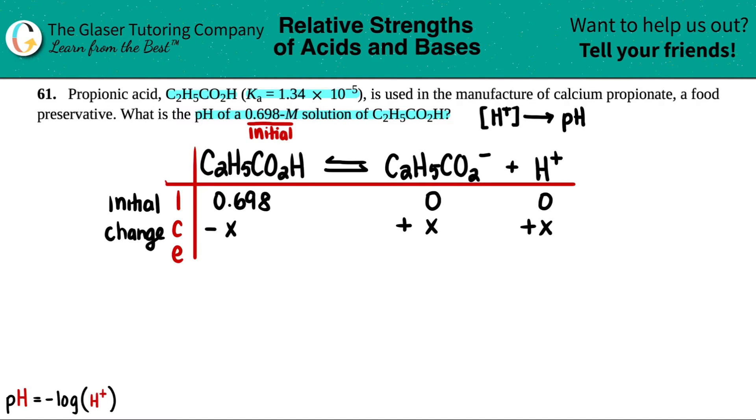E is the equilibrium. Equilibrium is when you tie in your initial with your change. So 0.698 minus X would be 0.698 minus X. Zero plus X is X. Zero plus X is X. Now we have our equilibrium line to solve for the Ka.